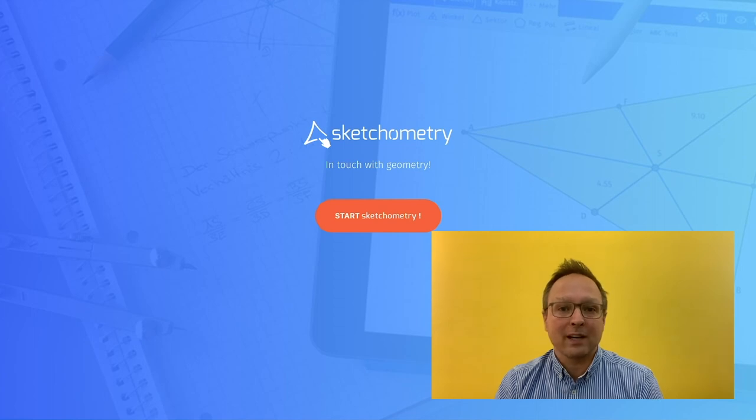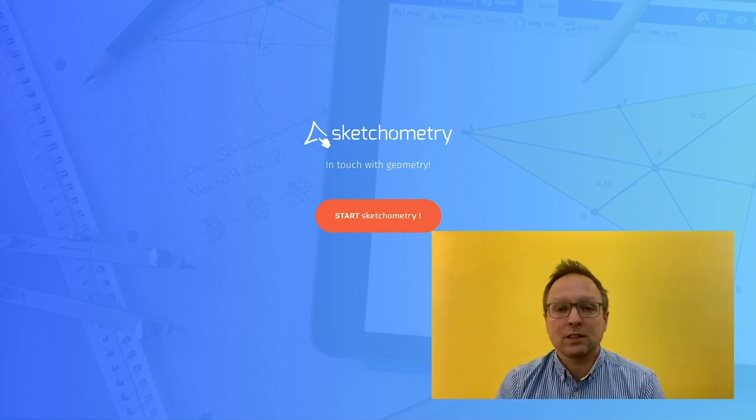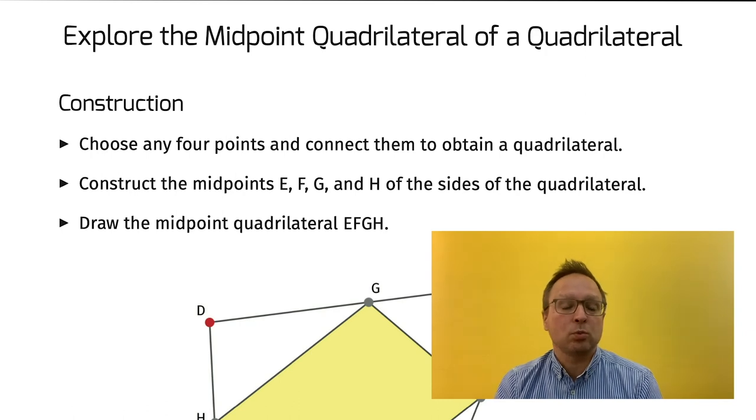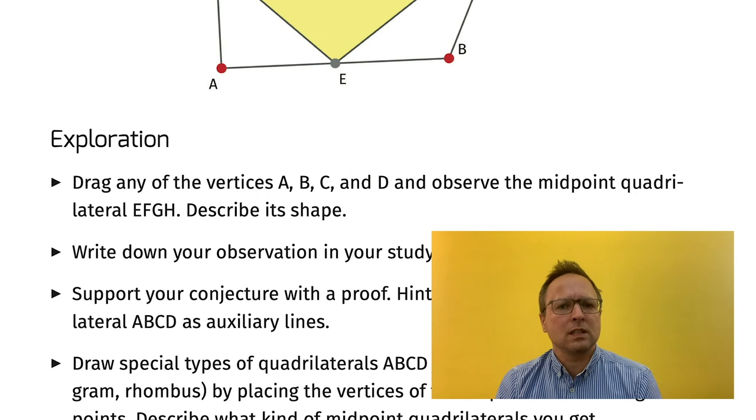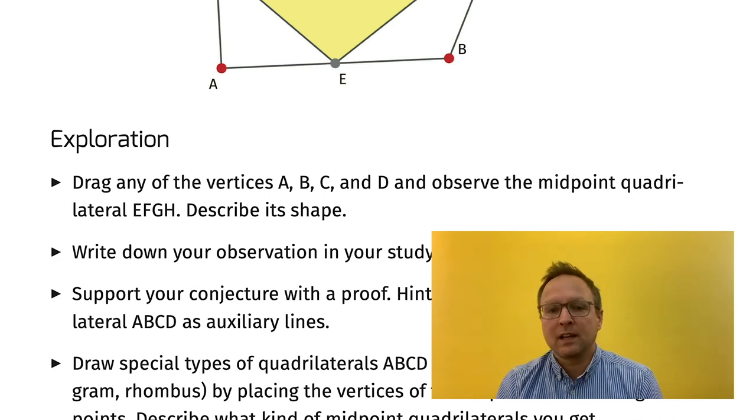Everything about sketchometry you can find on our website sketchometry.org. You can even start sketchometry with only one click — you don't have to install the software, it runs in the browser just as JSXGraph does. We also have apps for Android and iOS, and some additional material: gesture overviews in the documentation section, and worksheets for schools explaining how to use sketchometry in class. These worksheets are divided into two parts: a construction part where students are asked to create a construction, and an exploration part where students should find mathematical coherences within a construction.